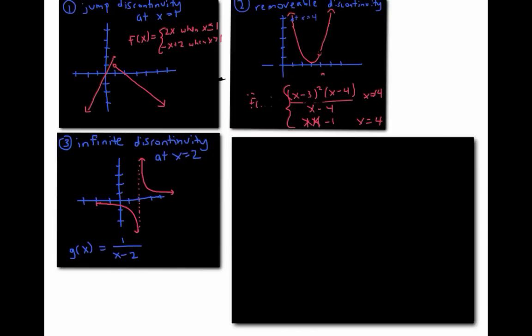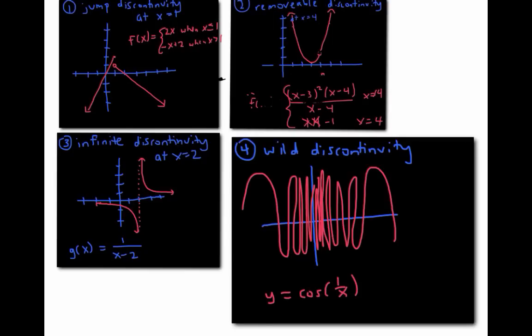Occasionally, you may encounter discontinuities that don't look like any of these. For example, the graph of the function y equals cosine of (1/x) has a wild discontinuity at x equals zero, because of the wild oscillating behavior there.